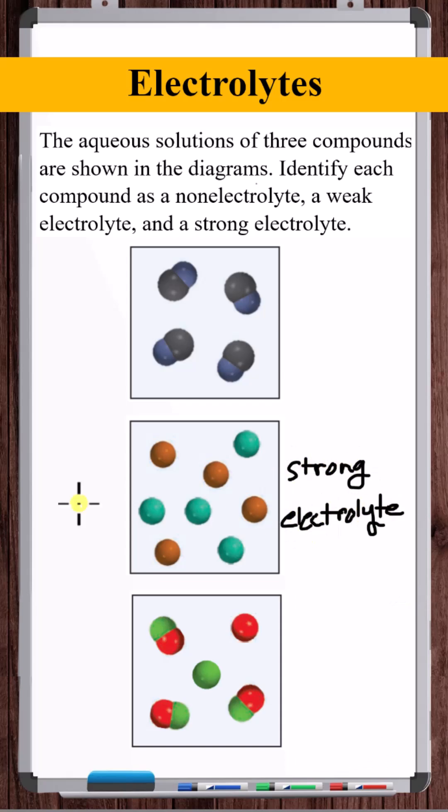Weak electrolytes can conduct electricity, so they do break up into ions, but it's not fully. Only a portion of the dissolved substance breaks up into ions, and that's what you can see here. These molecules didn't dissociate, but these two did. So this is the weak electrolyte.